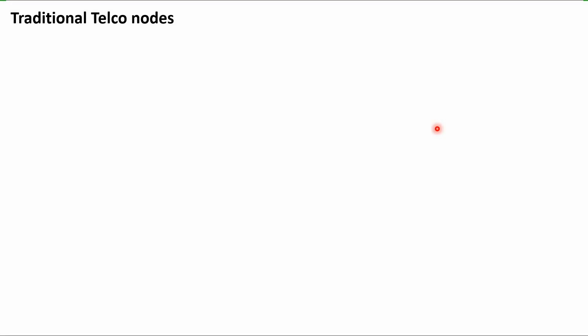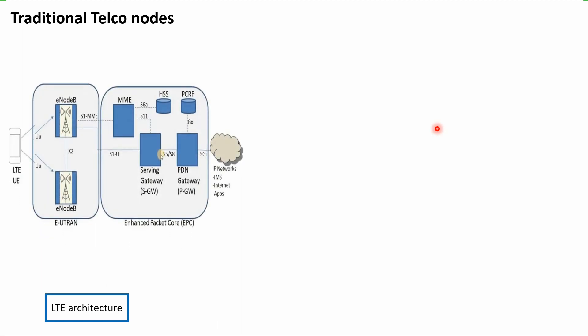In traditional telco nodes, the LTE architecture has a RAN part with eNodeBs, and a packet core and IMS which we collectively call the core network — it can be a voice core plus packet core jointly. Inside the packet core or core network, you have boxes which are applications: one is MME, another is SGW, PGW, HSS, PCRF, and some other nodes.